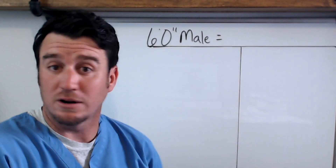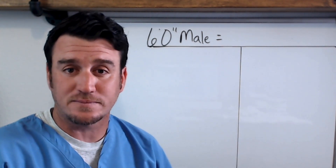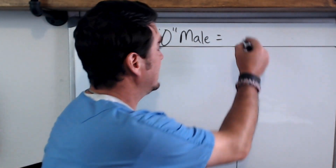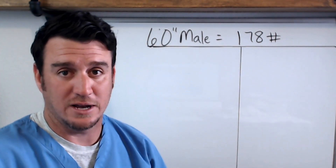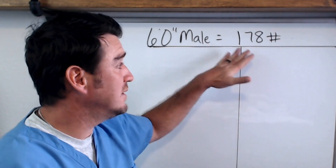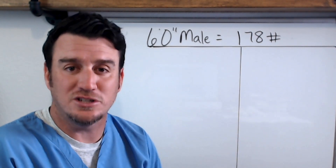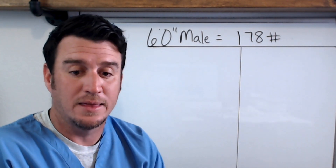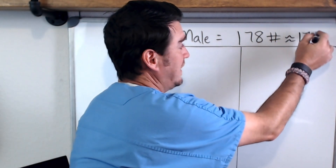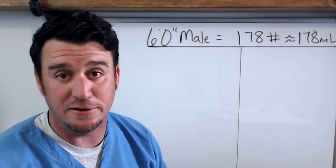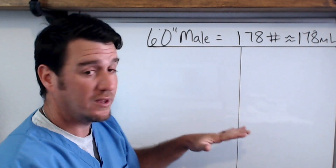What we have on the board here is a six-foot male. If you calculate ideal body weight for a six-foot male, you get 178 pounds. As respiratory therapists, we know that 178 pounds of ideal body weight equates to approximately 178 milliliters of anatomical dead space. So we can say this patient has approximately 178 milliliters of anatomical dead space.